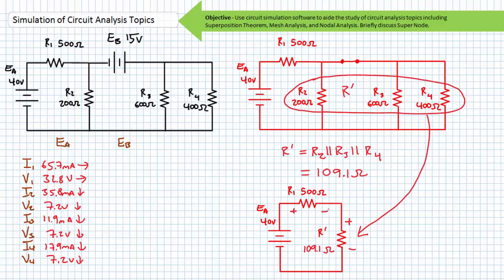Ohm's law can be used to solve the current through each individual resistive element, where I1 is determined to be 65.7 mA, left to right. I2 is determined to be 35.8 mA, top to bottom. I3 is determined to be 11.9 mA, top to bottom. And I4 is determined to be 17.9 mA, top to bottom.